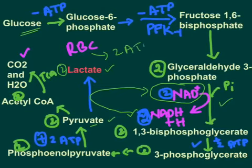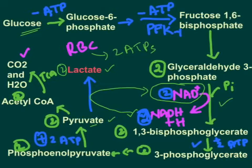The regenerated NAD+ participates in the glyceraldehyde-3-phosphate dehydrogenase reaction, ensuring a continuous supply. This allows glucose to be continuously oxidized to pyruvate and then to lactate, so RBCs can continuously make two net ATPs. This is why red blood cells and anaerobic tissues reduce pyruvate to lactate — to regenerate NAD+ and sustain glycolysis. The enzyme responsible is lactate dehydrogenase.